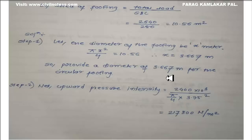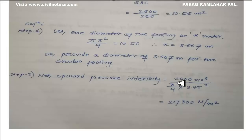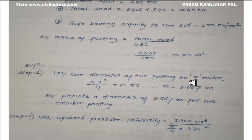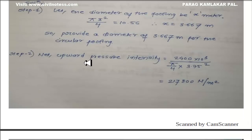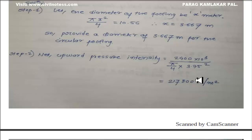Step 2: Determine the net upward pressure intensity. The net upward pressure intensity is calculated using the column load divided by pi by 4 into the diameter of the footing squared. So that is 2400 into 10 raised to the power 3 Newton divided by pi by 4 into 3.75 squared. We get the net upward pressure intensity as 217,300 Newton per meter square.